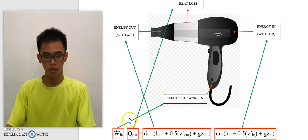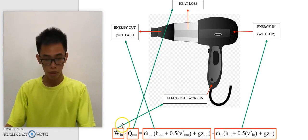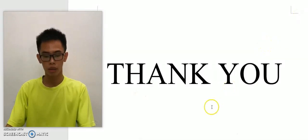Lastly, this is the combination of the final equation with the figure of the hair dryer. The W_elec_in is electrical energy input to the hair dryer and Q_out is heat loss to the surrounding. This is the energy in and this is the energy out. That's how the hair dryer is related to the thermodynamics principle. That's all from our video. Thank you for watching.